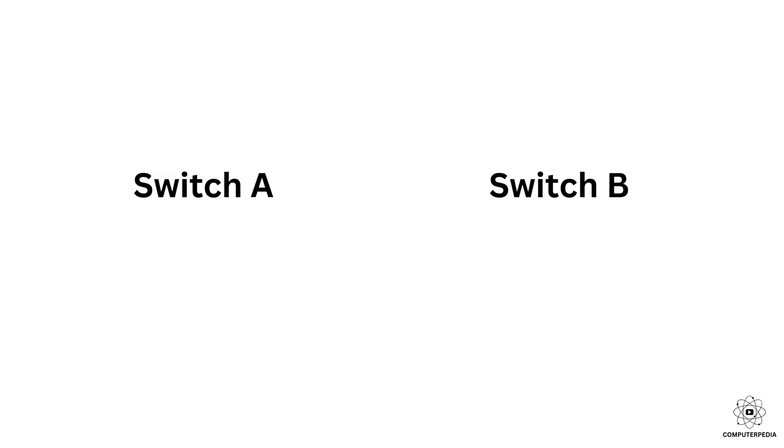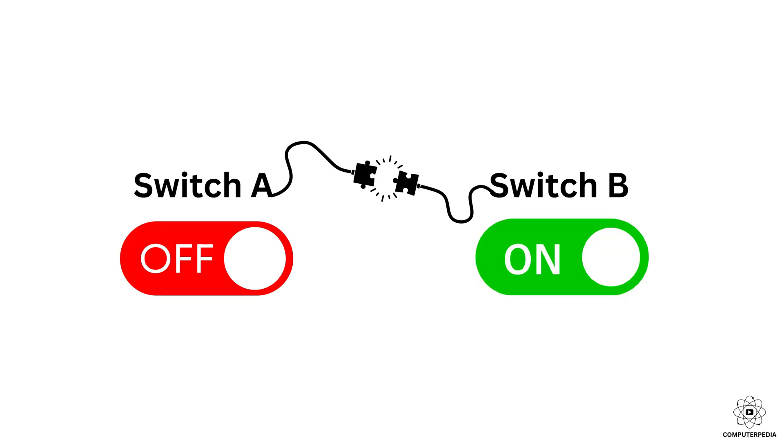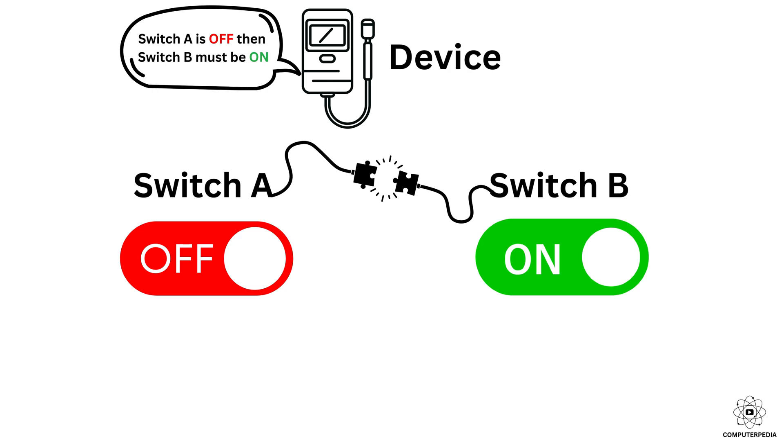Imagine you have two switches instead of one, and each switch can be either on, which is one, or off, which is zero, just like bits. But now also imagine that these two switches are connected in a special way, so that when one of them is on, the other one is always off, and vice versa. Now suppose you have a device that lets you check the state of one of the switches. The moment you measure one, you immediately know the state of the other, right? No delay, no waiting, because remember, they are connected.